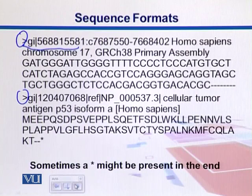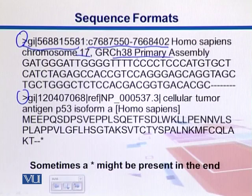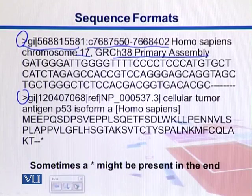The 'C' designation indicates it's coming from the complementary strand, and the regions from which it's coming are designated with base positions. This gene is located in those positions. There is a short description indicating it's coming from Homo sapiens, chromosome 17. This is the primary assembly — where short sequence reads are put together into a gene. The actual sequence starts below, with around 60 base pairs per line.